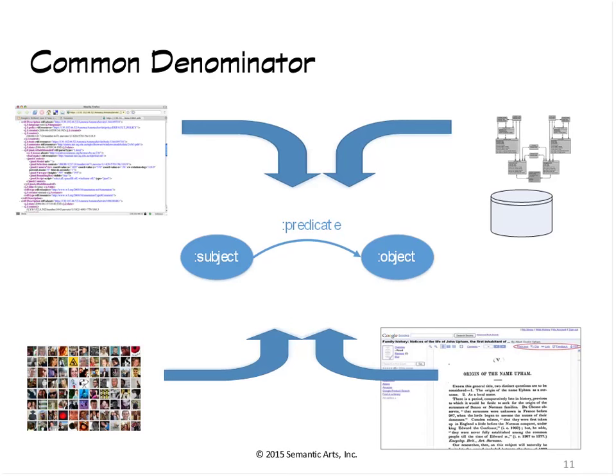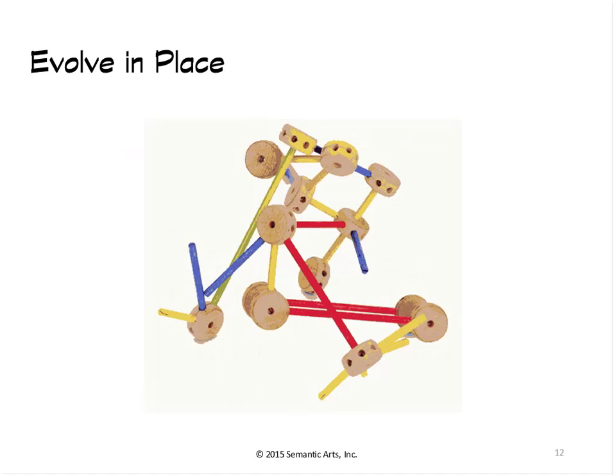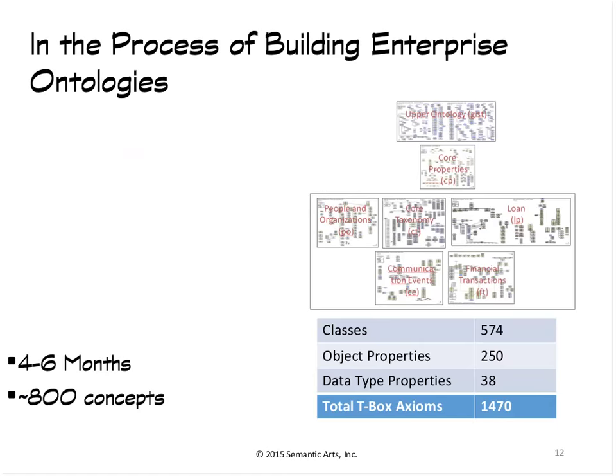There are many use cases that spin off from this — systems integration, systems building, and many other things. When we say these things can evolve in place, I think Tinker Toys is a great analogy. You build some stuff, there are still more places you can add things and keep adding. You don't have to stop and restructure and refactor all the time.